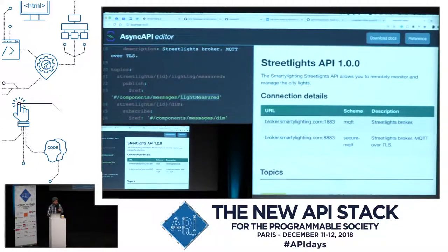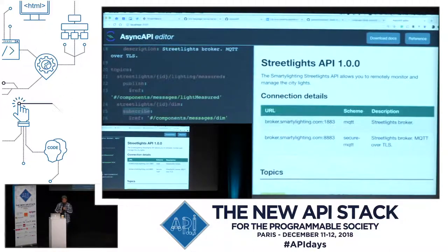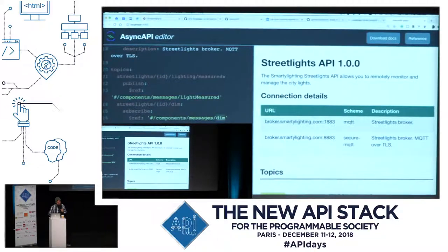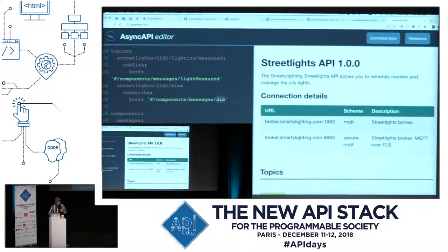Then you have another channel which is about an order. This API is the one installed inside the StreetLight device. So the StreetLight can subscribe to receive the order — the command — or can send information; that's why the other one was "publish." And this command is going to be "dim" — dim the light to a certain percentage or whatever.